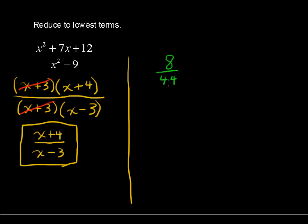But what you're really doing, even if you do it in your head, is you are factoring this 8 as 4 times 2 and you're factoring the 44 as 4 times 11.